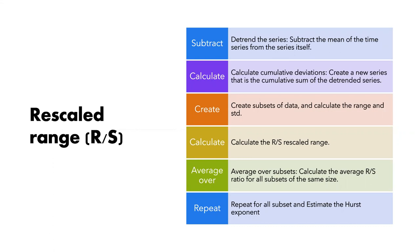First, we detrend the series by subtracting the mean of the time series from the series itself, so the series is centered around zero. We then calculate the cumulative deviation, creating a new series that is the cumulative sum of the detrended series. Then we break the cumulative deviation series into non-overlapping subsets of a particular size, calculate the range R and the standard deviation, and compute the rescaled range as the ratio between R and the standard deviation. We average over all subsets and repeat this process multiple times.